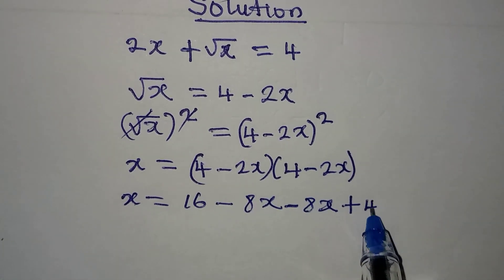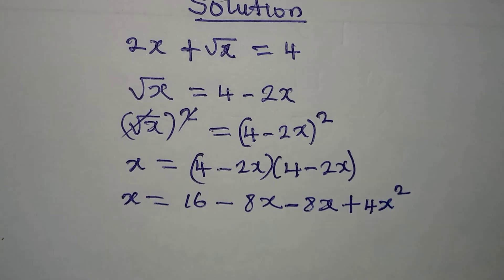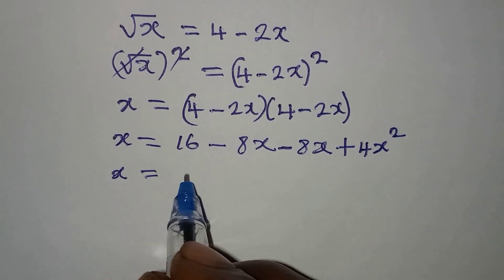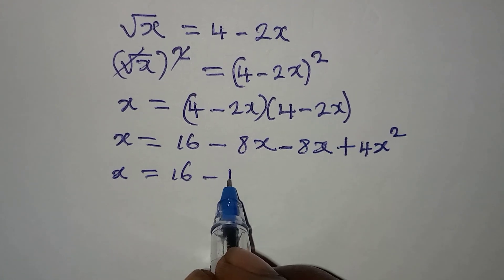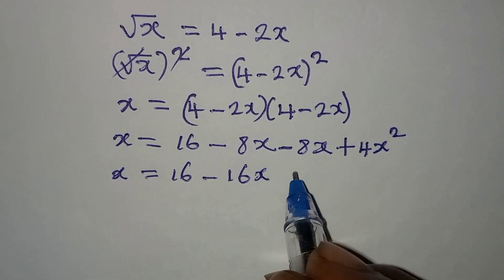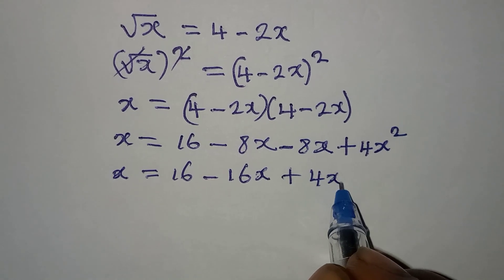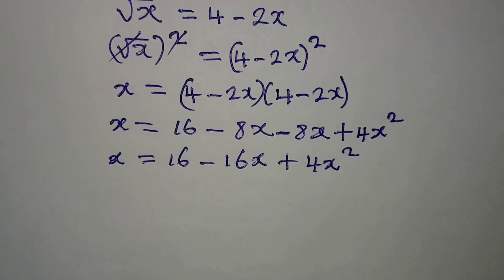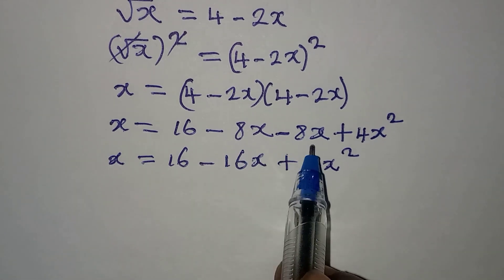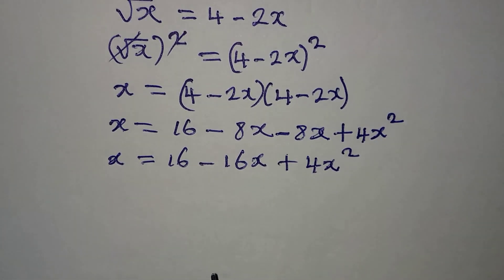This means x = 16 - 16x + 4x². How did I get -16x? This -8x minus 8x gives us -16x. Now let's rewrite this very quickly.